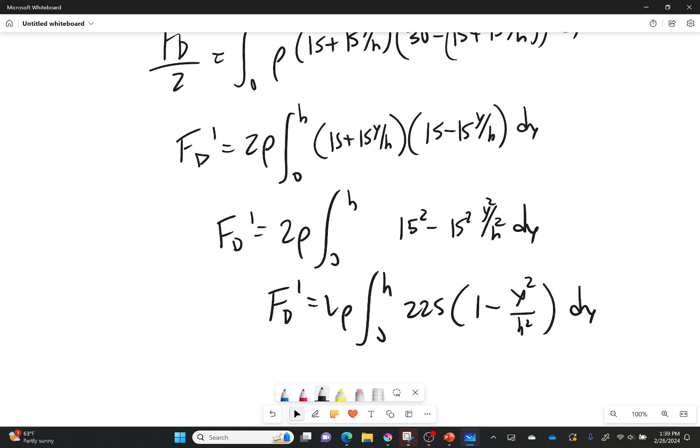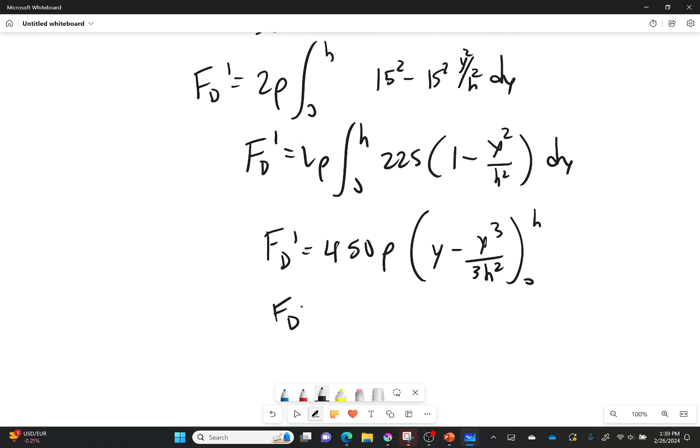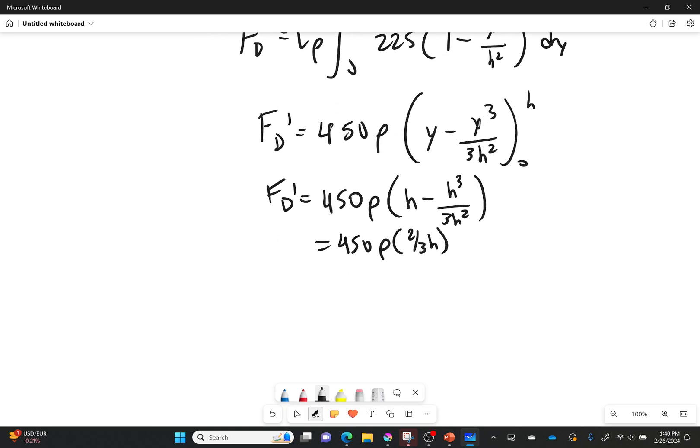Force drag prime is equal to 2 times the density integral from 0 to h of 225 times 1 minus y squared over h squared. Glorious dy. We got it, everybody. We got it. So what we're going to do now is we're going to go ahead and take the integral of this. And so it's going to be 450 times the density of y minus, make sure I'm doing this right. Yes. y cubed over 3h squared. And that's going from 0 to h.